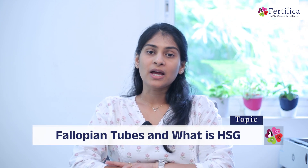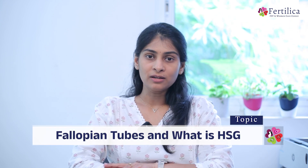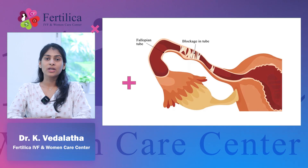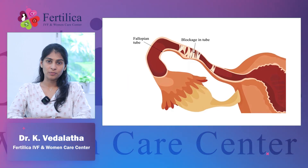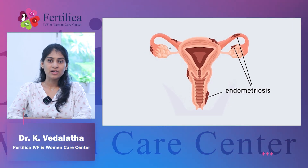Fallopian tubes act as a channel for the oocyte transport and fertilization. One of the most common causes of infertility is blockage in the fallopian tubes, which can be due to multiple reasons like infection and endometriosis, etc.